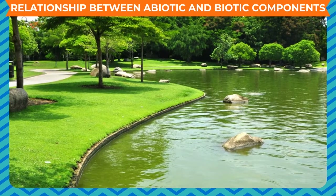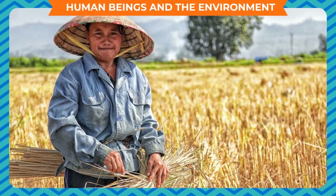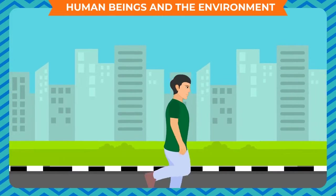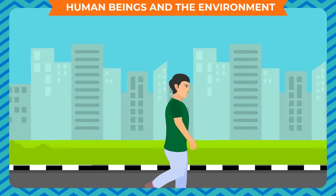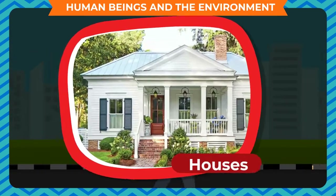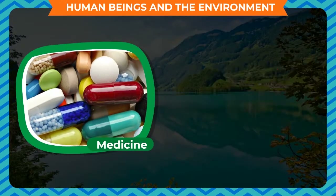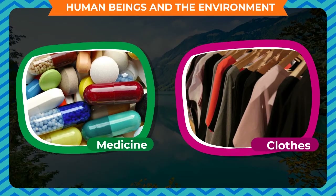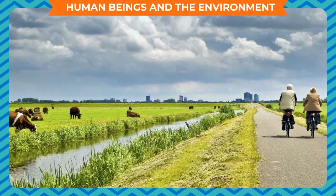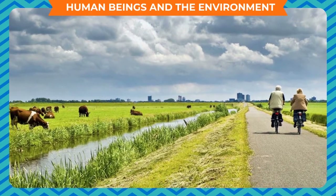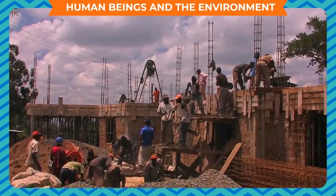All human beings and animals should preserve natural resources to maintain a balance between biotic and abiotic components. Every human being depends on the environment for their needs such as oxygen from air, water, food from plants, and land to make houses. Besides their basic needs, other needs like medicine and clothes are also fulfilled from the environment. However, human activities to fulfill all these needs ultimately degrade the quality of the environment.